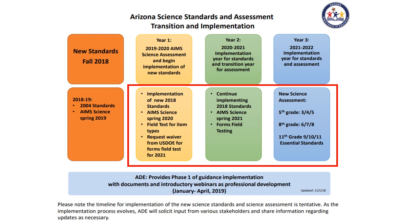What do all these changes look like as the new standards roll out to districts and charters? Let's first talk assessment. In the next school year 2019–2020, the current AIMS science assessment will be given just like this year, aligned to the 2004 standards, and in the spring of 2020 it will be administered to grades 4, 8, and high school biology.